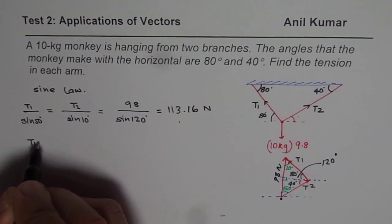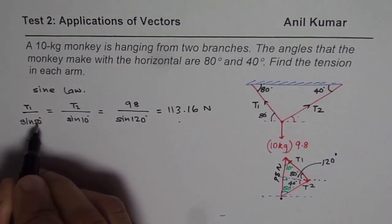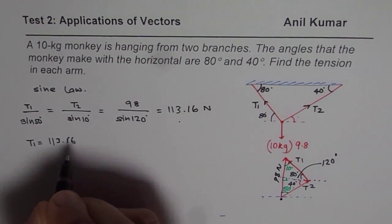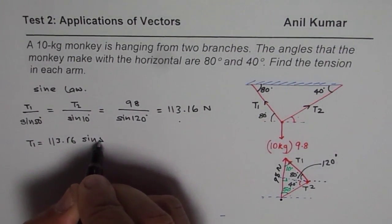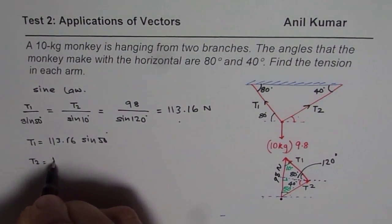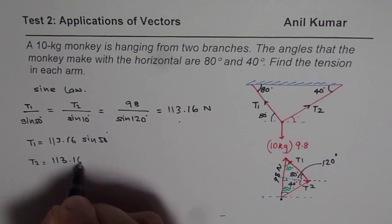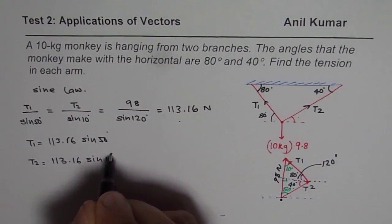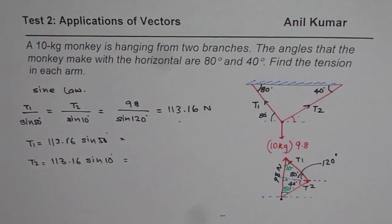Now it is easy. What is T1 equals to? T1 equals to that number times sine of 50. So it is 113.16 times sine of 50 degrees. And T2 will be the same number, 113.16 times sine of 10 degrees. Just cross multiply, that is how you can easily get the answer.